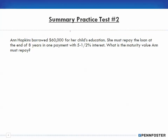Problem two: Ann Hopkins borrowed $60,000 for her child's education. She must repay the loan at the end of eight years in one payment. The time is in years, so we don't need to use ordinary interest of 360 days or exact interest of 365 days, and we're not converting months over 12.